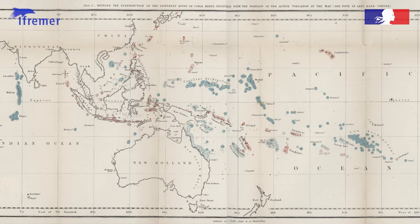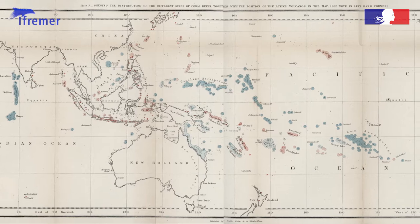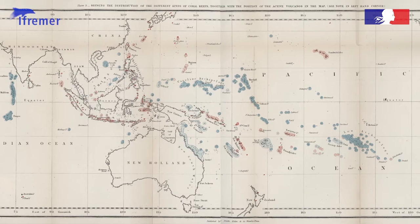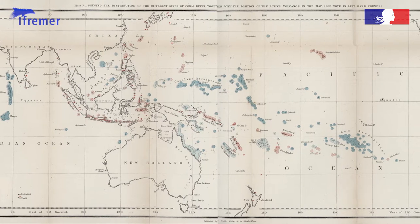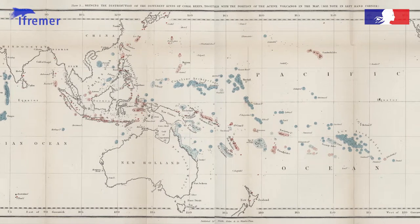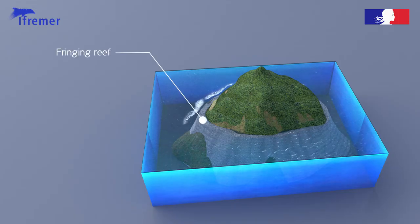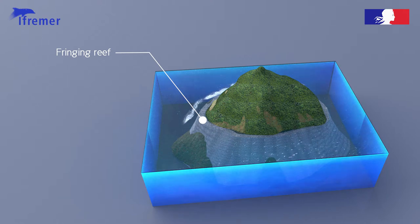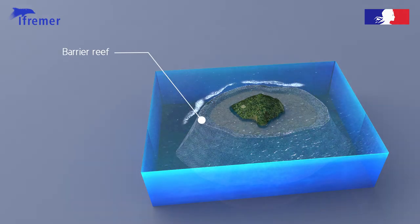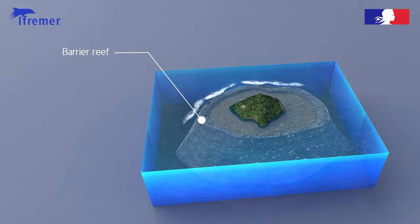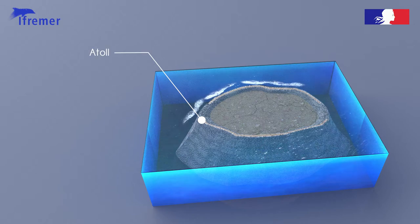He classified all the known reefs on Earth at that time into three categories: fringing reefs, barrier reefs, and atolls.